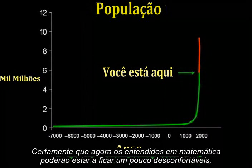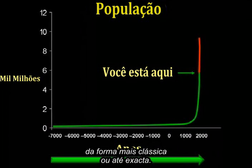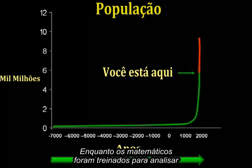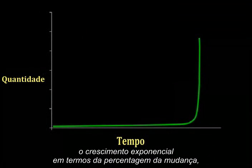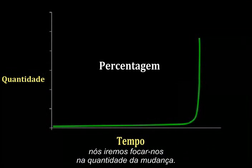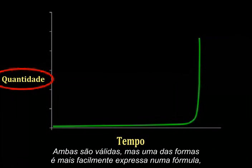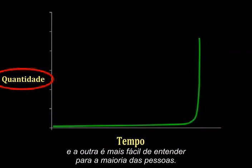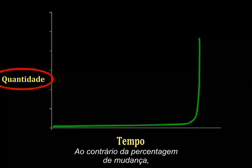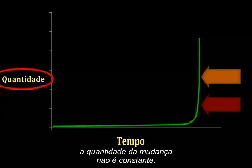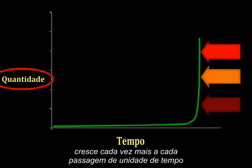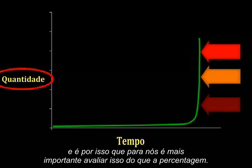Math-minded folks might feel I'm not presenting this information in a classical or even very accurate way. Where mathematicians have been trained to define exponential growth in terms of the rate of change, we are going to focus on the amount of change. Both are valid — it's just that one way is easier to express as a formula, and the other way is easier for most people to intuitively grasp. Unlike the rate of change, the amount of change is not constant. It grows larger and larger with every passing unit of time, and that's why it's more important for us to appreciate than the rate.